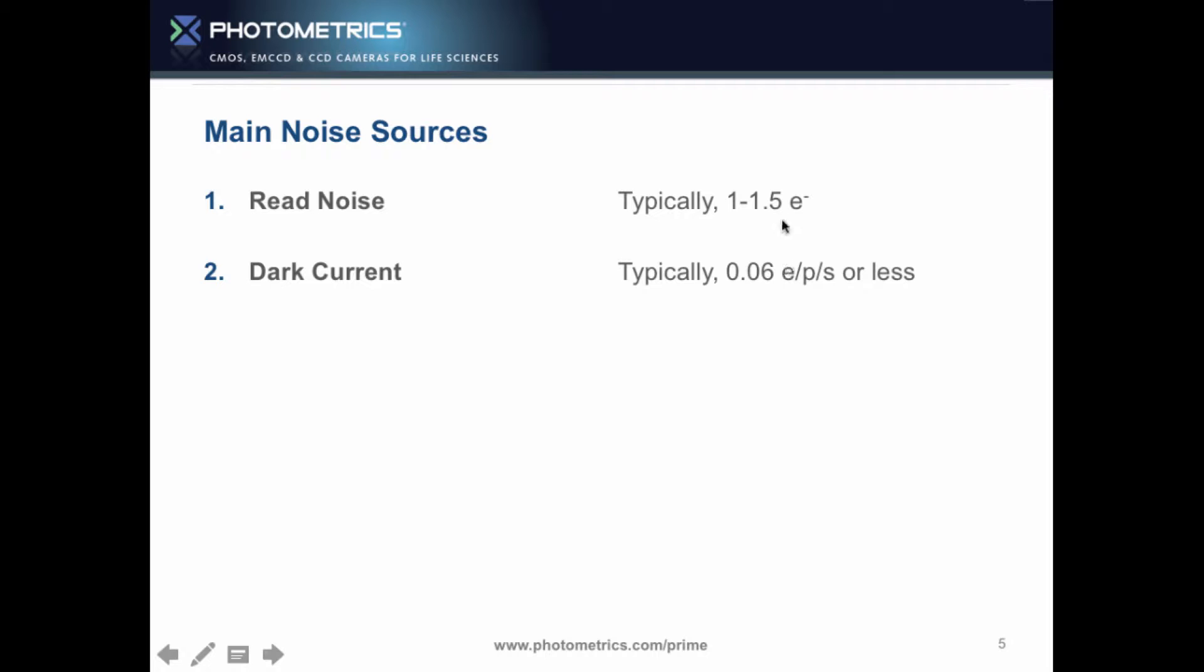And again, these numbers are really small. Yeah, that's the great thing. Years ago, read noise would be 12 electrons. Years ago, dark current, one electron. You know, we've really reduced those. What's left? Well, really, shot noise. And shot noise is the square root of the signal, and this becomes the remaining problem.